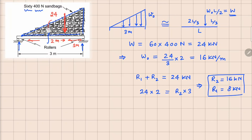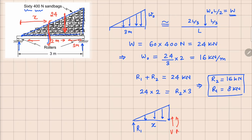Now for the shear force and bending moment diagram, we make a cut at a distance of X from this side. The free body diagram of this cut shows the distributed force acting up to distance X, with reaction R1 on the left. The distributed load value is 16 kN/m at a distance of 3. So at a distance of X, using similar triangles, the intensity WX equals (16/3)·X.